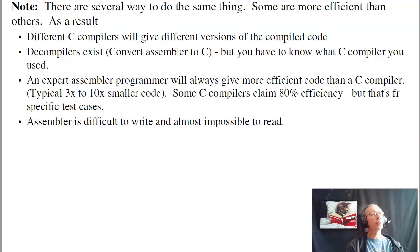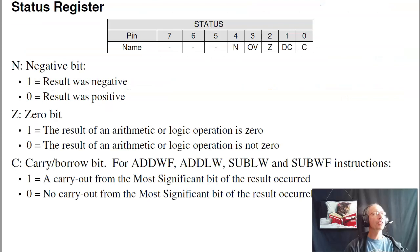And note, there's several ways to do the same thing. Some are more efficient than others. C compilers claim that they do it the optimal way. And typically, a good assembler can make the code 3 to 10 times smaller than a C compiler. Gotta remember, somebody had to write the C compiler. And it's hard to make a C compiler work for every possible C instruction set you can come up with. There's usually shortcuts you can do in assembler.